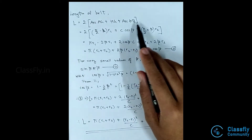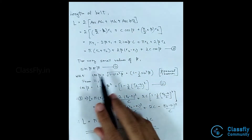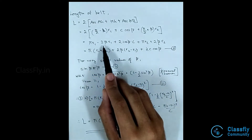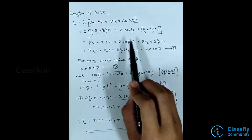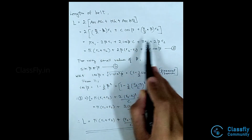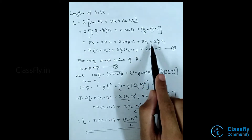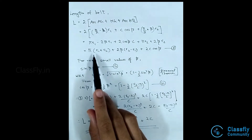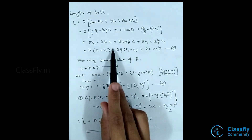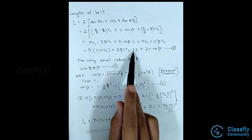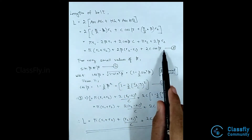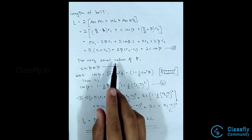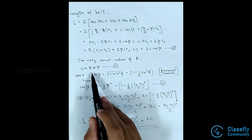Arc HB = (pi/2 + beta) times r2. Expanding this we have: pi*r1 - 2*beta*r1 + 2*C*cos beta + pi*r2 + 2*beta*r2. Grouping similar terms gives: pi(r1 + r2) + 2*beta*(r2 - r1) + 2C*cos beta. Name this equation 3.